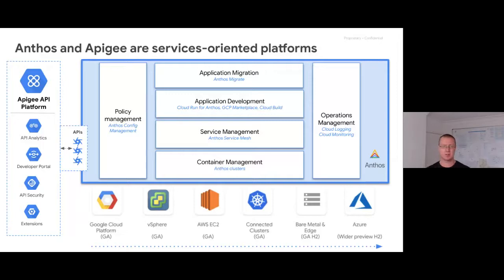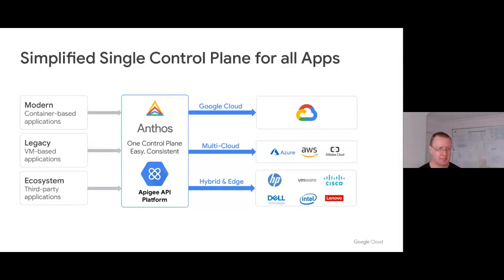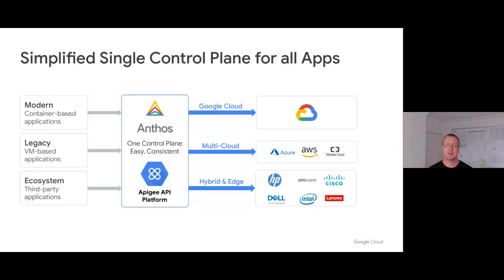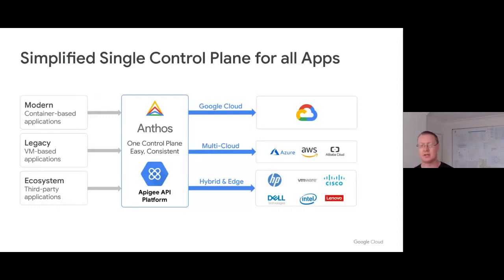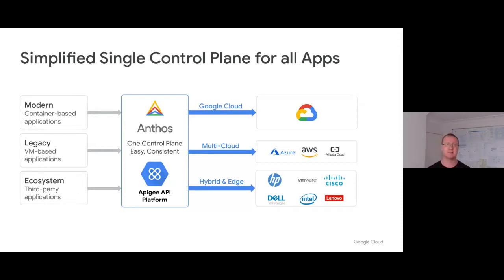Whether it's a modern application, a legacy VM-based application, or a marketplace application, we should be able to manage all of those centrally with one single pane of glass view and deploy to any cloud we choose and to any platform running in our data centers today. We've got a number of reference architectures shared publicly around how we may choose to run Anthos and Apigee together on top of HPE, Cisco, Dell, Intel, or Lenovo hardware — making it very portable and flexible for any type of arrangement a customer may choose to run on-prem. Flexibility is one of the main points there.